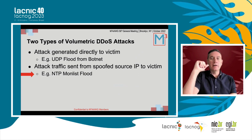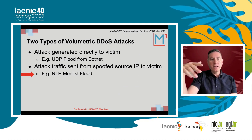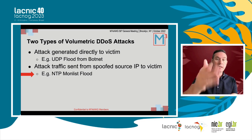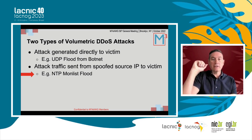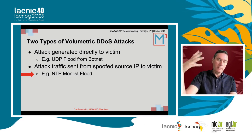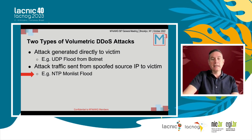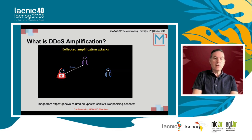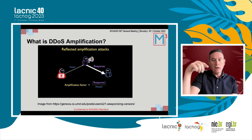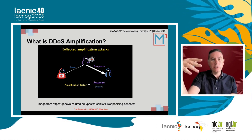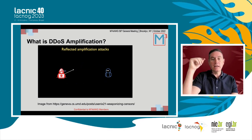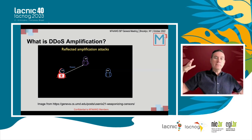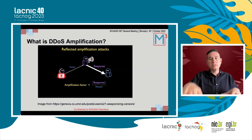There are two types of volumetric DDoS attacks. There are attacks generated directly to the victim, where there is a flood coming from a botnet. The other type I'm going to focus on is attack traffic sent from a spoofed source IP to the victim — a very common example is an NTP monlist flood. DDoS amplification is where the attacker spoofs the source IP of the victim, sending amplification request packets to numerous destinations on the internet that have open services which amplify the traffic, and those open services send a greater response back to the victim.